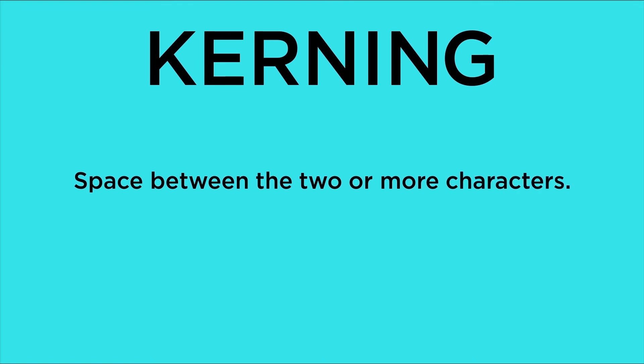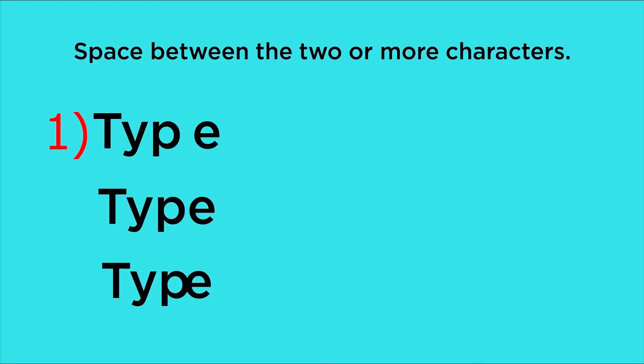Kerning is the space between two or three specific characters. For example: the first type is poor kerning where too much space is added; the second type is perfect kerning; and the third type is less kerning. So you should keep the kerning at its default setting, and only adjust it if you feel something needs to be changed.